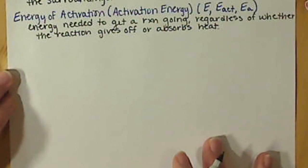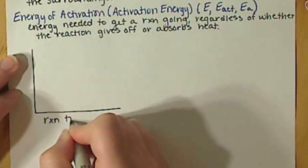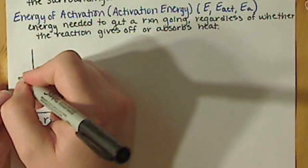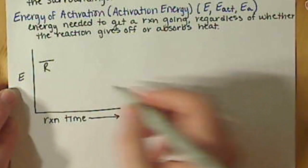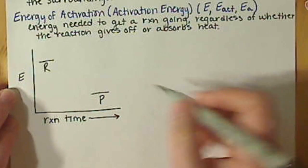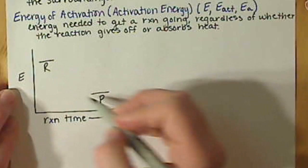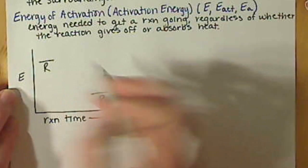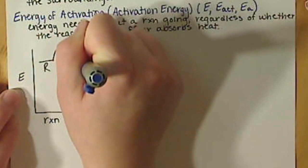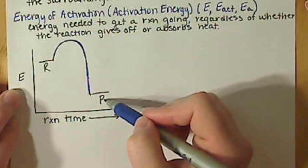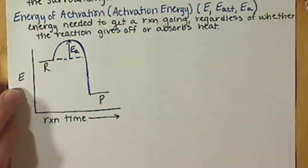If we look at this concept graphically and just very simply, we're going to look at reaction time — so as the reaction progresses — and then we have energy here. If we start off with our reactants having a total amount of energy, and then we form our products, we have to put in a certain amount of energy to get these reactants to actually form products. It's not a direct line in between them; it's more like a hill. So we have to get up and over this hill in order to get this reaction to happen. This extra amount of energy that's required is our energy of activation.